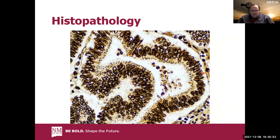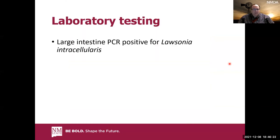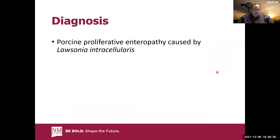A silver stain of the intestine revealed small curved lines at the top of the epithelial cells — not the nuclei at the base. These were identified as intracellular bacteria. PCR testing of the large intestine was positive for Lawsonia intracellularis, an obligate intracellular anaerobic bacterium. The diagnosis was porcine proliferative enteropathy.